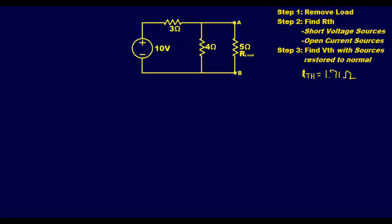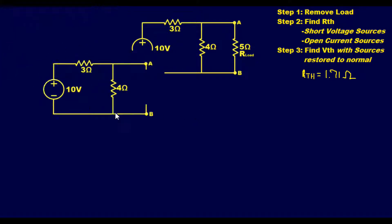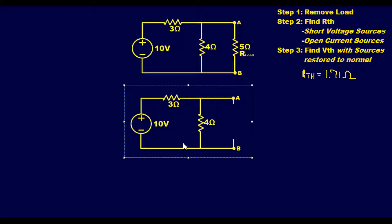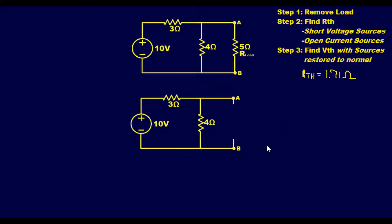Now let's find V_thevenin. We restore our circuit back to normal with the voltage source un-shorted, with the exception of the load resistor which remains removed since we're still performing the Thevenin analysis. We look at this circuit as if we had a meter between points A and B. The voltage between A and B is the same as the voltage across the 4 ohm resistor, so we just need to find that voltage.